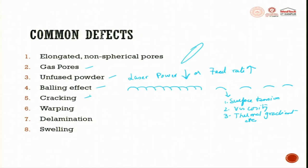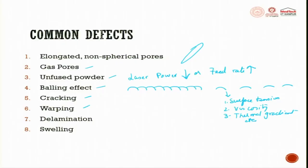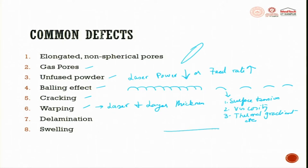Then we have cracking. Cracking is because of improper solidification - tensile stresses come at the top which pull and try to tear the material, leading to a crack. Then warping is because of the difference in temperature gradient, so you have residual stress getting involved, which tries to warp the entire component. This predominantly depends upon the laser power and layer thickness. If the layer thickness is too little and the laser power is too high, instead of a flat layer you get a warped layer. Then delamination happens between layers.